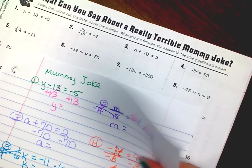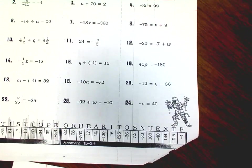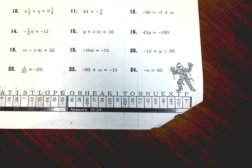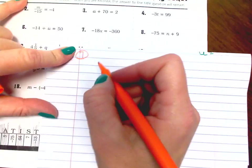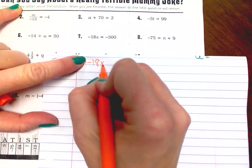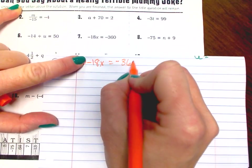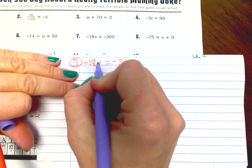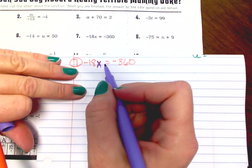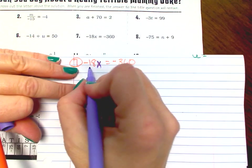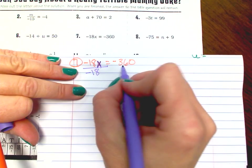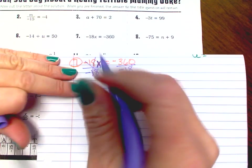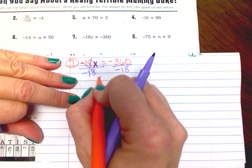Number 7. Find your variable and ask yourself what the number is doing to the variable — we're multiplying. So you want to do the opposite, which is divide by negative 18. What you do to one side, you must do to the other side. If this cancels out, you're left with x equals the answer.